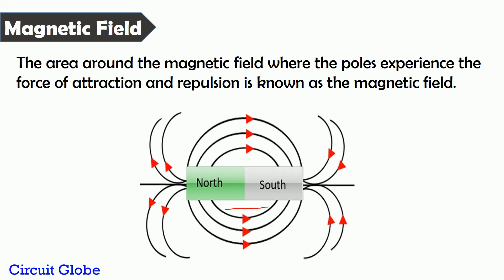Suppose we are placing a bar magnet in space and we place a piece of iron near it — the magnet tries to attract that iron piece. But if we place the iron piece far away, the distance is too high and the iron is not attracted by the magnet. So what is the reason behind this?